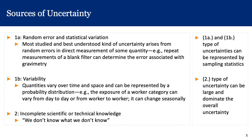Now let's look at the different sources of uncertainty when we are trying to model any particular scenario. Number one, which has two parts A and B, are the types of uncertainty and variability we have all studied in statistics courses. Type 1A is random error and statistical variation. This is most studied and best understood, and it arises from random errors in direct measurement of some quantity. For example, repeat measurements of a blank filter can determine the error associated with gravimetry. These uncertainties are distributed according to a normal distribution.